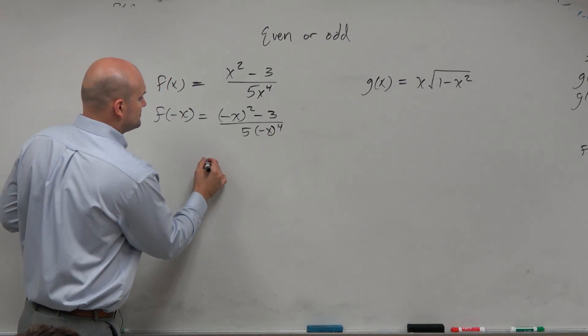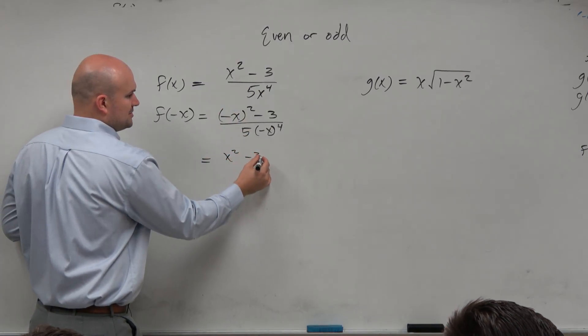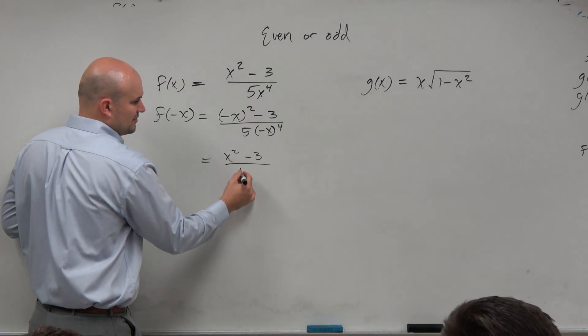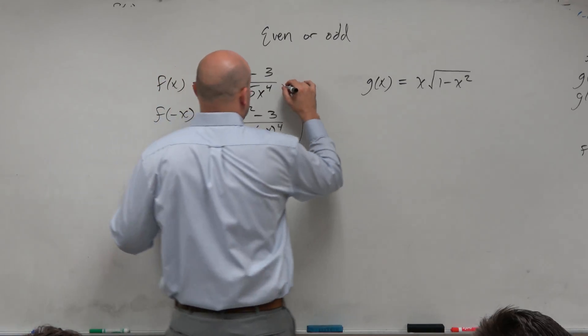So when we do this, negative x squared is x squared. Nothing happened to the 3. Negative x to the 4th is still just going to be x to the 4th. Do you guys see how I got back the original equation?